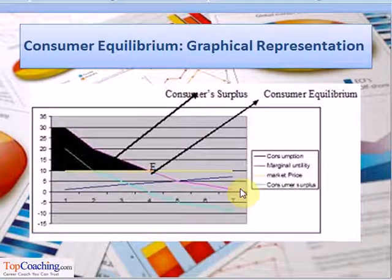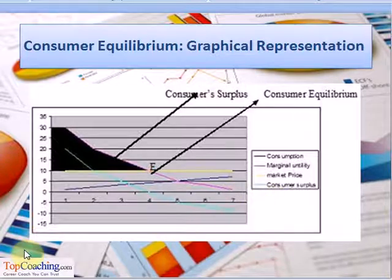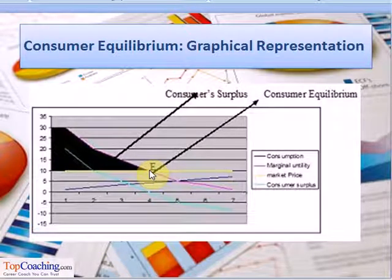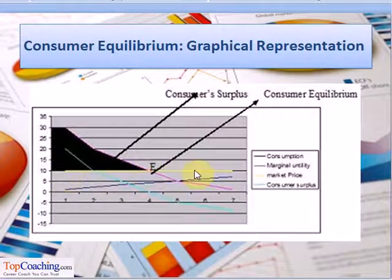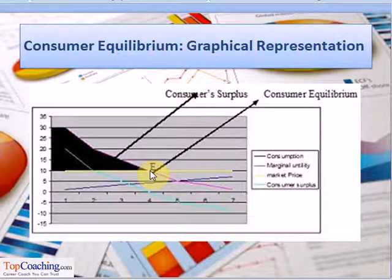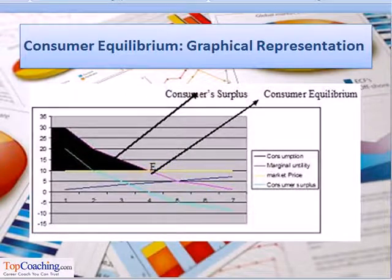The graph shown here illustrates consumer equilibrium. As consumption increases, the marginal utility decreases. The point where the purple line of marginal utility intersects the yellow line of the market price — that is, where marginal utility equals market price — is the consumer equilibrium point, shown in the graph as point E.